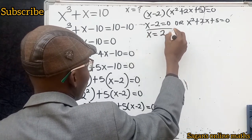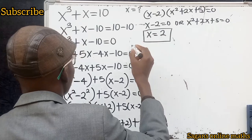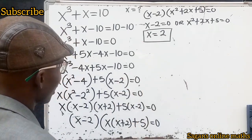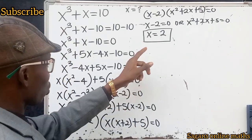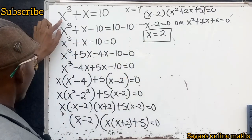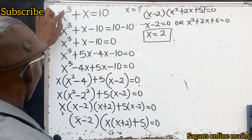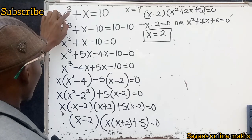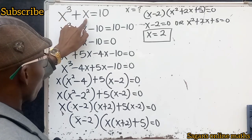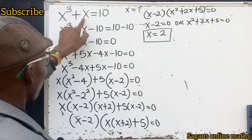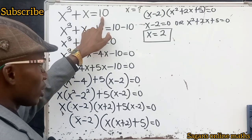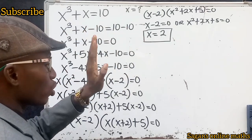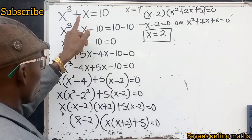This is one of the values of x that satisfies this equation. Let's check: when x equals 2, 2 to the power of 3 is 8, and 8 plus 2 is 10. We are correct — x equals 2 is one of the solutions to this problem.